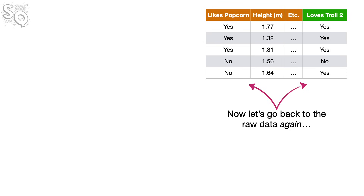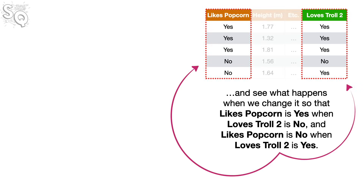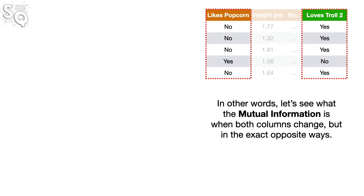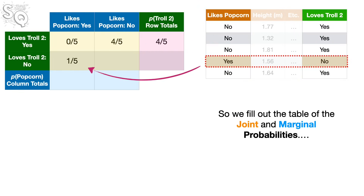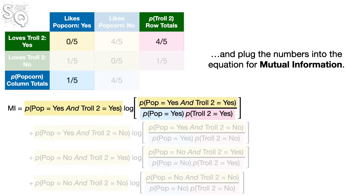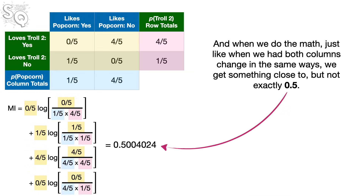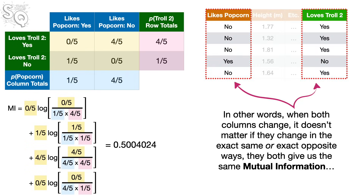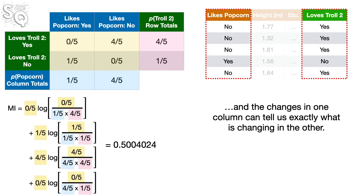Now let's see what happens when likes popcorn is yes when loves Troll 2 is no, and likes popcorn is no when loves Troll 2 is yes — both columns change in the exact opposite ways. When we fill out the table and plug the numbers into the equation, we again get something close to, but not exactly, 0.5. So when both columns change, it doesn't matter if they change in the exact same or exact opposite ways — they both give us the same mutual information, and the changes in one column can tell us exactly what is changing in the other.